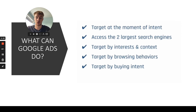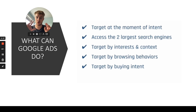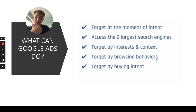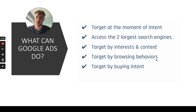You have access to the two largest search engines — Google and the Google Display Network, including YouTube Ads. Not only can you target by keywords and intent, but also by interests and context, just like on Facebook. You can also do behavioral targeting based on what pages people were visiting before, and your ads will show up on those pages. Most powerfully, you can target people by buying intent, which no other network currently offers.